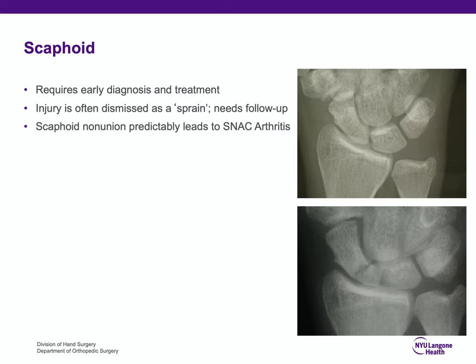Scaphoid fractures require early diagnosis and treatment. When patients come to the emergency room, they oftentimes have scaphoid tenderness but x-rays are negative and it's diagnosed as a sprain. If you see someone in the emergency room, it's appropriate to splint them and tell them they need re-evaluation in two weeks for a repeat x-ray, which may become positive — because we know that scaphoid non-union ultimately leads to painful wrist arthritis. It's very common to see patients who say they hurt their wrist six months ago and were told they were fine.